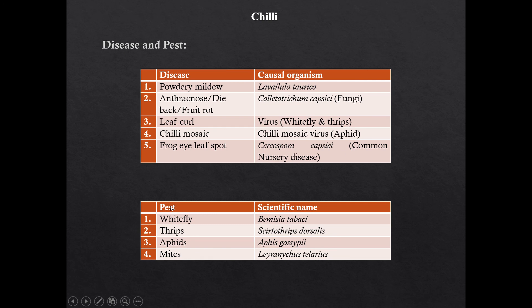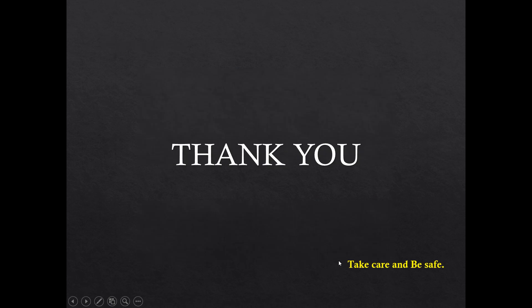Pests: Whitefly has scientific name Bemisia tabaci. Thrips of chili is Scirtothrips dorsalis. Aphid is Aphis gossypii. Scientific name of mites is Polyphagotarsonemus latus. That is all for today's class. In the next lecture, we will discuss about the crop okra. Don't forget to like, subscribe and share with your friends who are preparing for this exam. Take care and be safe.